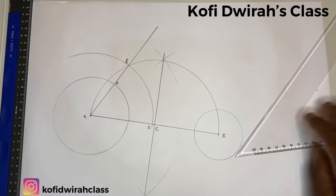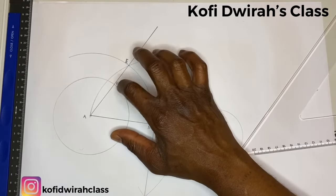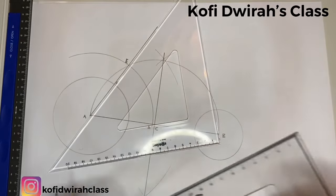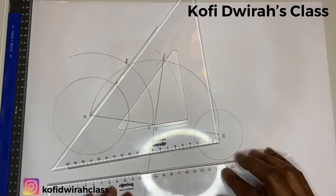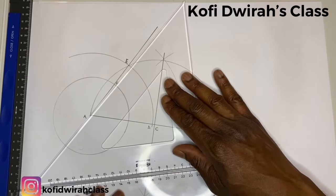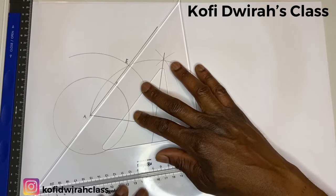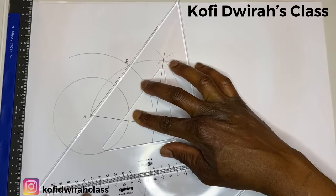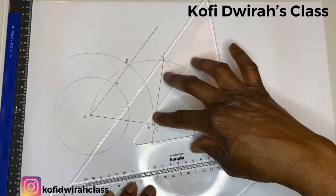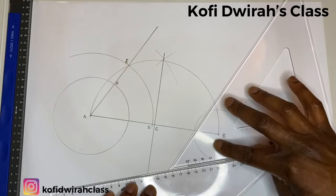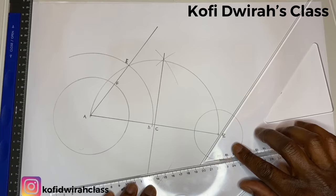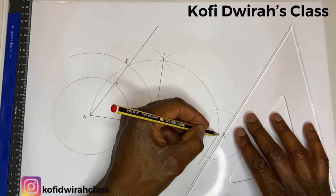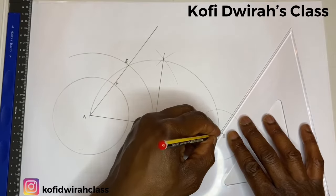Then with your set squares, you transfer the normal from the bigger circle to the smaller circle. You transfer the normal — this is the normal — and you use the same method for transferring lines, or when you are dividing lines into equal parts. The same method: you first put a set square like this, then you put this underneath like this, then just move the upper set square slowly to position, then you draw your line. After getting it you can just extend it a bit. Good.